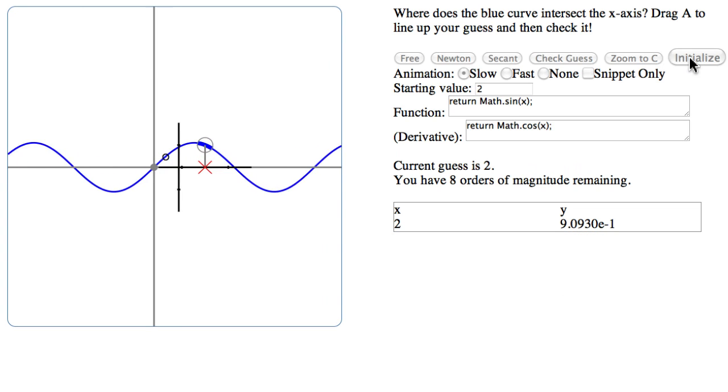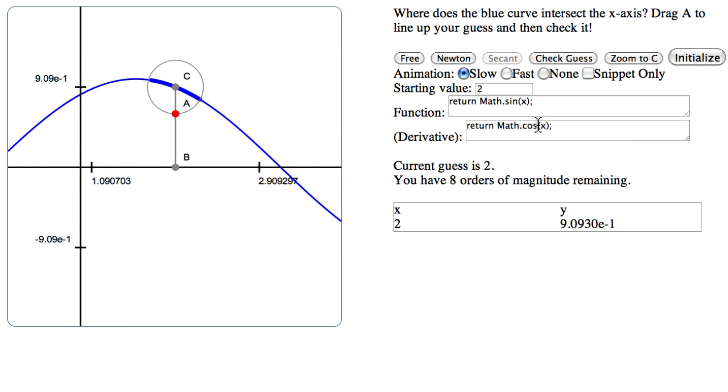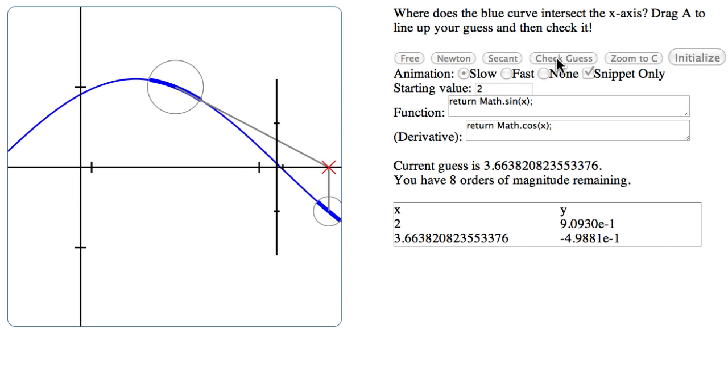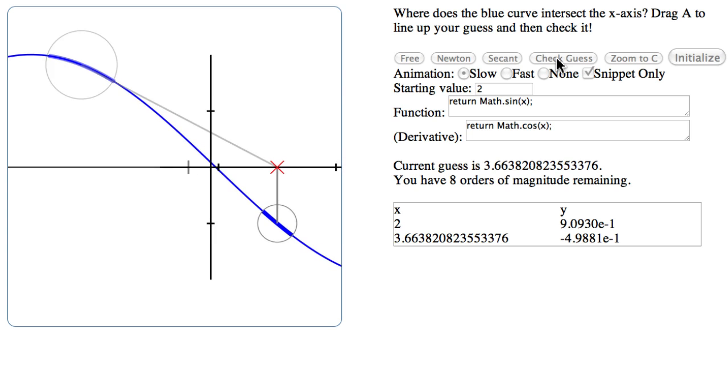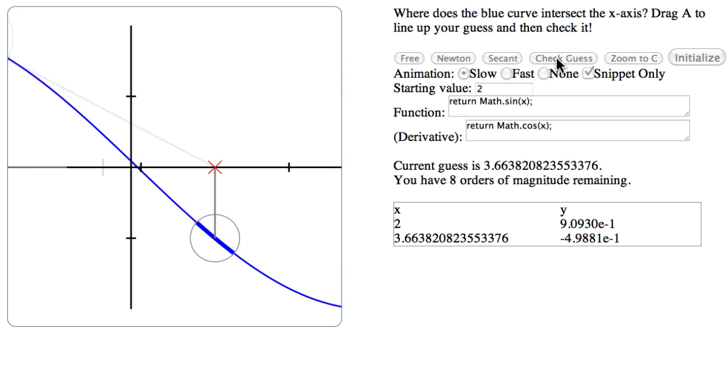Now let's check out the secant method. So the secant method is actually older. The way that works is you actually need two points before you can start using it. So we'll just line it up here and check the guess.